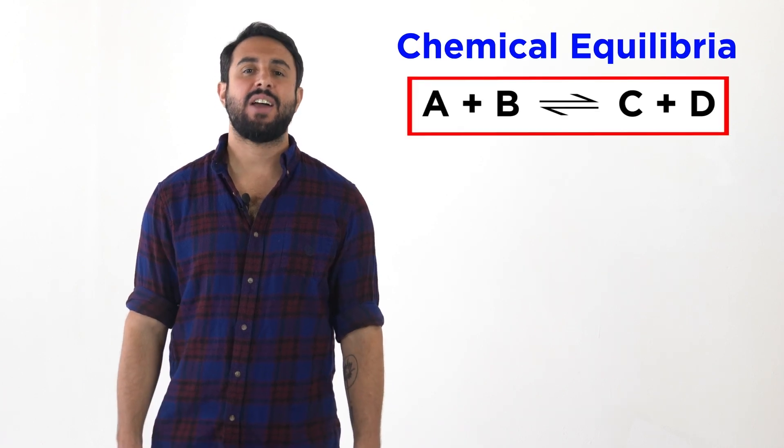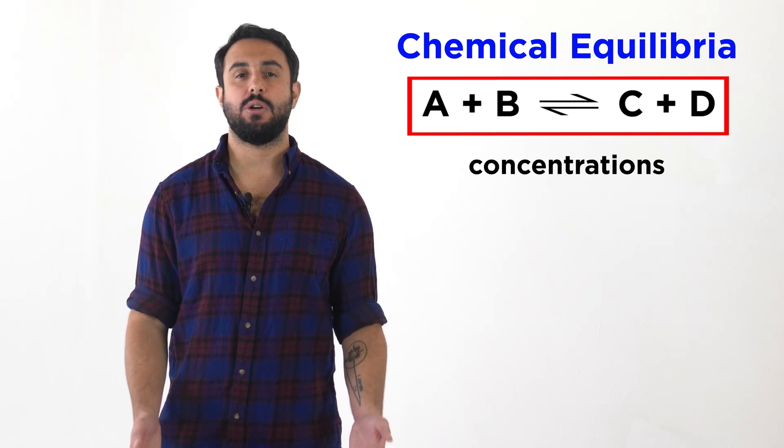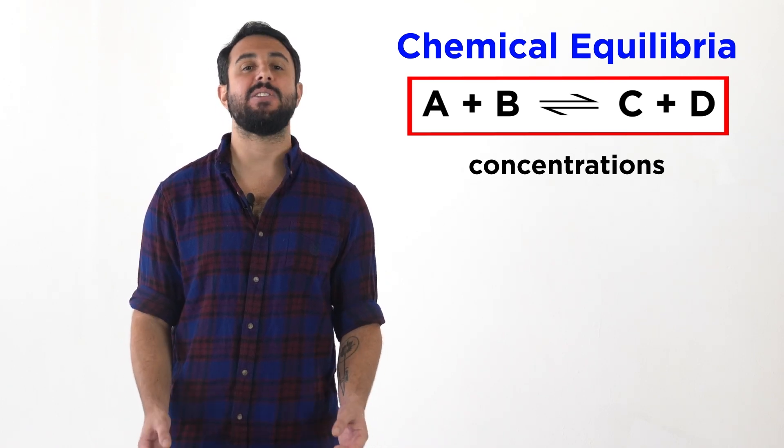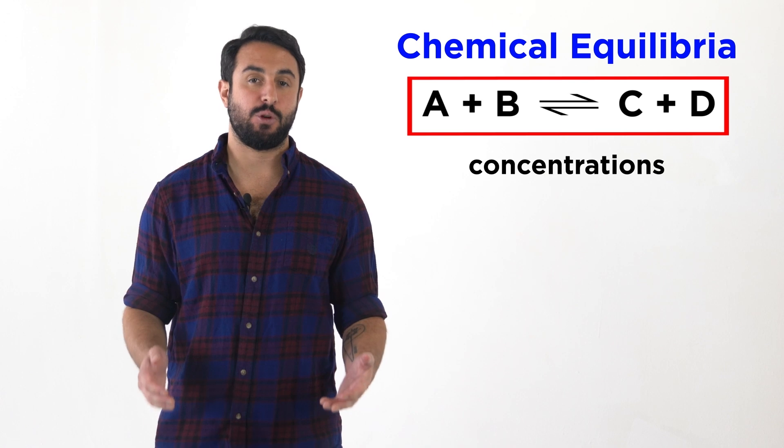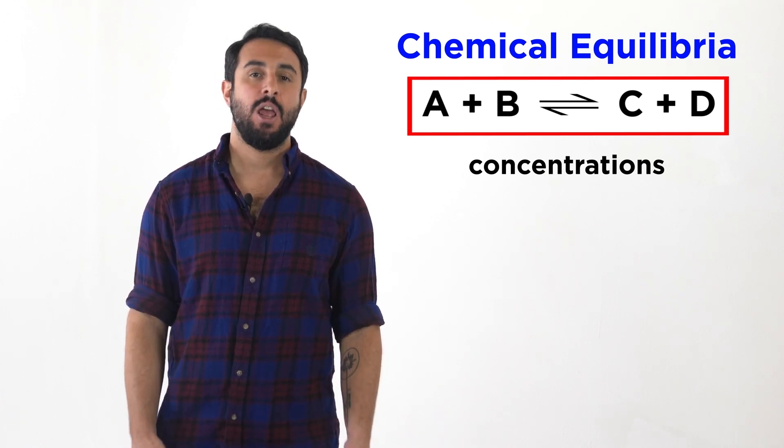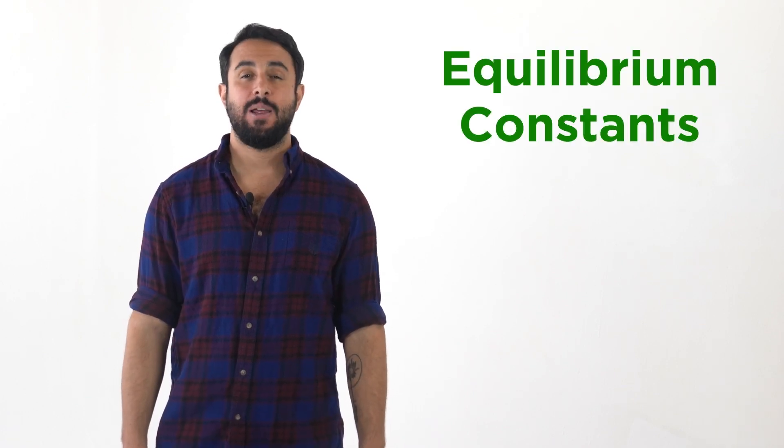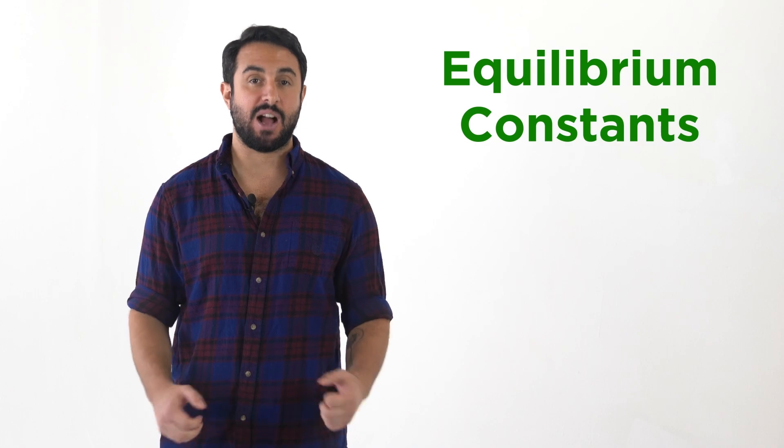Professor Dave and Chegg here. Now that we understand what chemical equilibria are, we will want to be able to look at the concentrations of substances involved in reversible reactions and be able to predict how these concentrations will affect the equilibrium of the system. Let's learn how to do that by examining equilibrium constants.